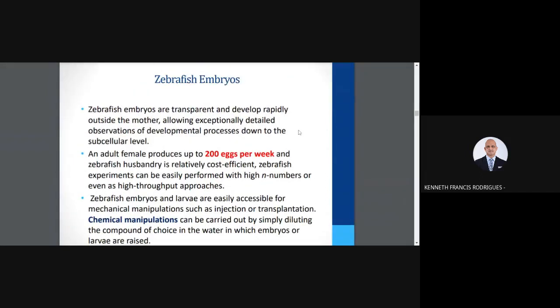Zebrafish embryos are transparent and develop rapidly outside the mother. Adult fish produce at least 200 eggs per week, enabling researchers to collect large numbers of eggs for statistical analysis. You can conduct chemical manipulations by diluting a compound — such as a mutagen — in water and raising embryos in that chemical reagent. This has formed the basis for many toxicity studies, as compounds toxic to vertebrates can be tested using the zebrafish model.